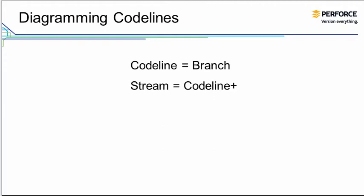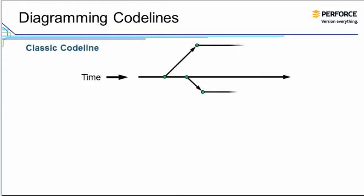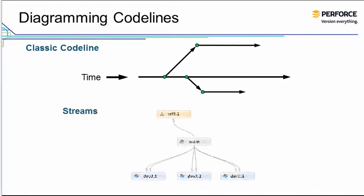You typically illustrate classic codeline or branch hierarchies using horizontal lines to depict branches, with time moving forward from left to right. Perforce displays streams in a stream graph using rounded rectangles, each rectangle representing a separate stream.